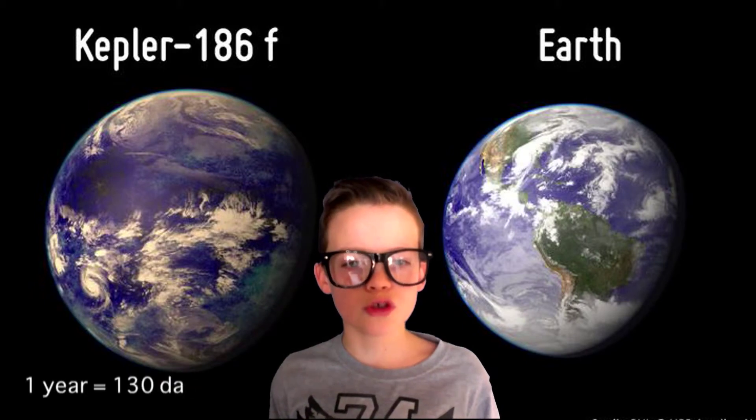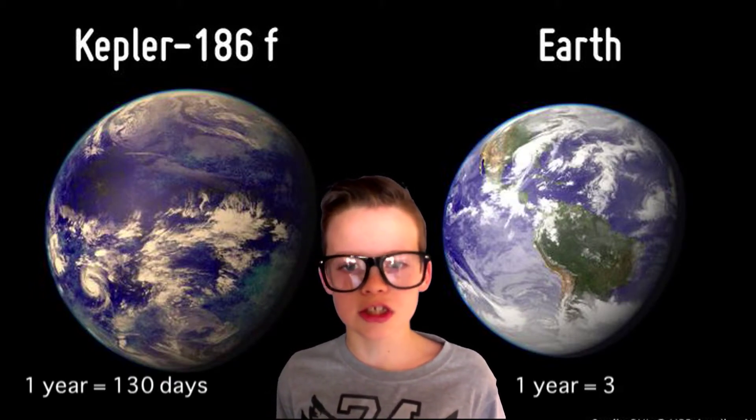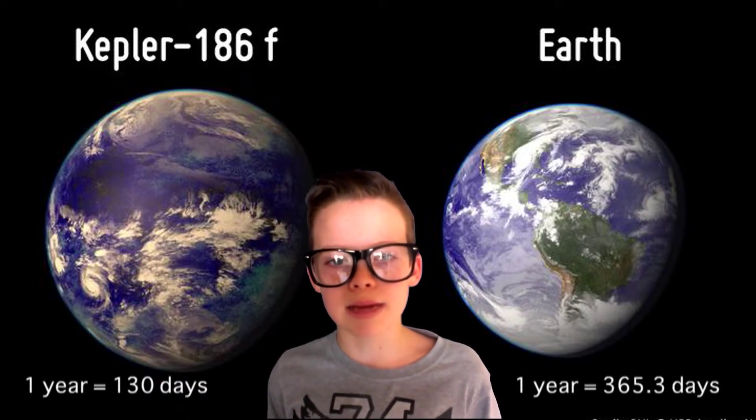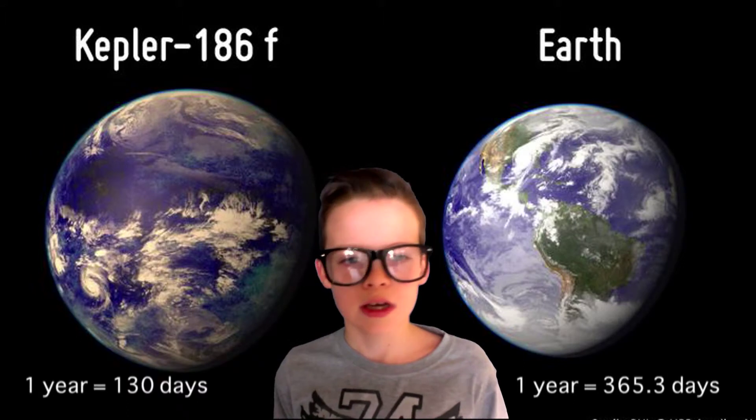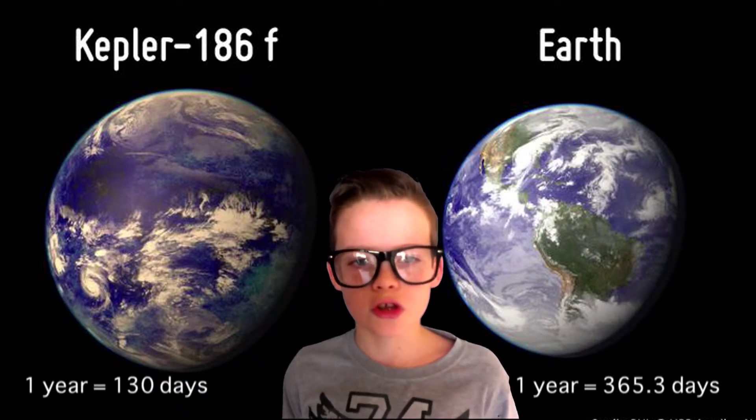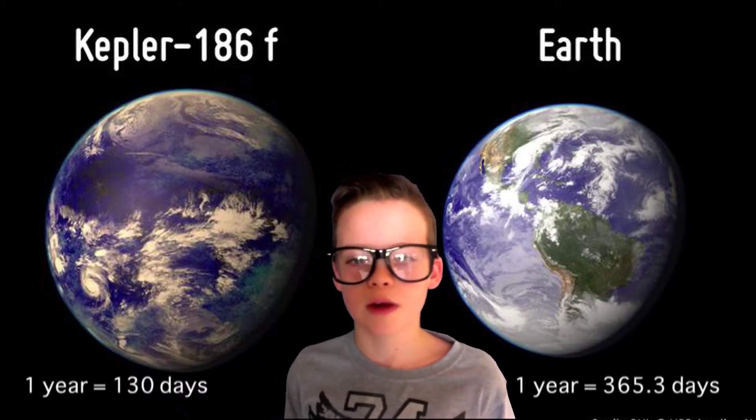However, a year on Kepner 186F is only 130 Earth days, whereas a year on Earth is of course 365.3 days long. This is because we are 93 million miles away from our sun, and Kepner 186F is just 32.5 million miles away from its star.